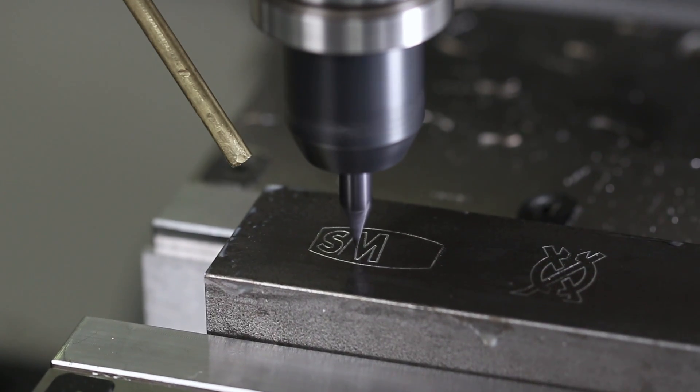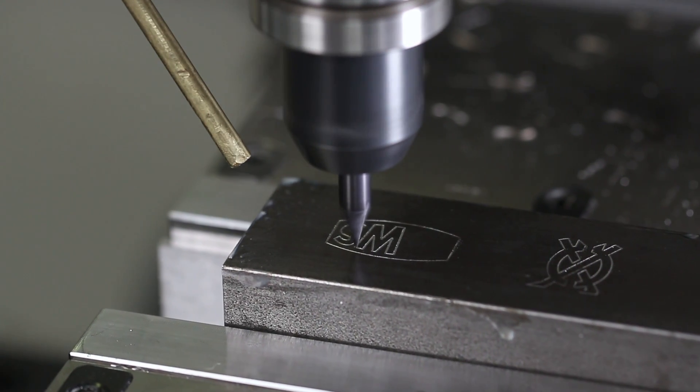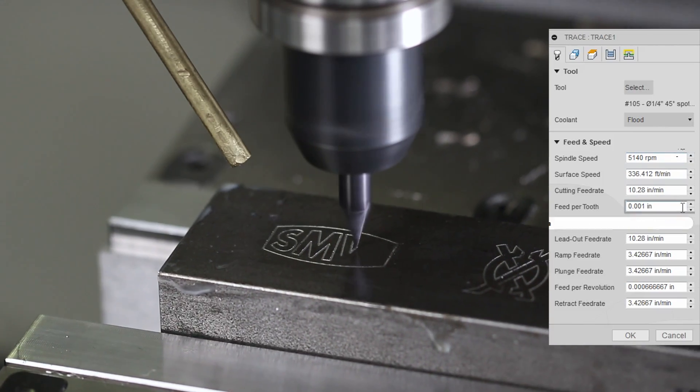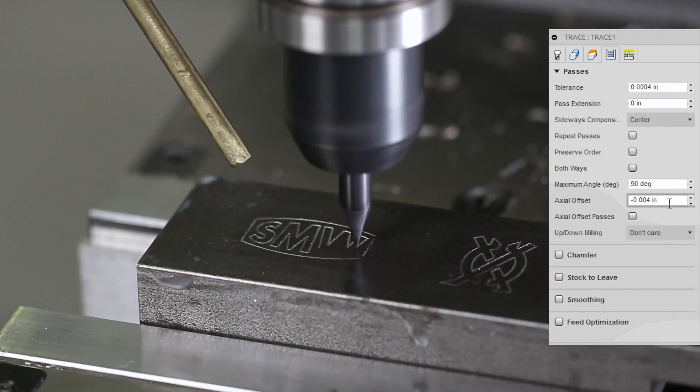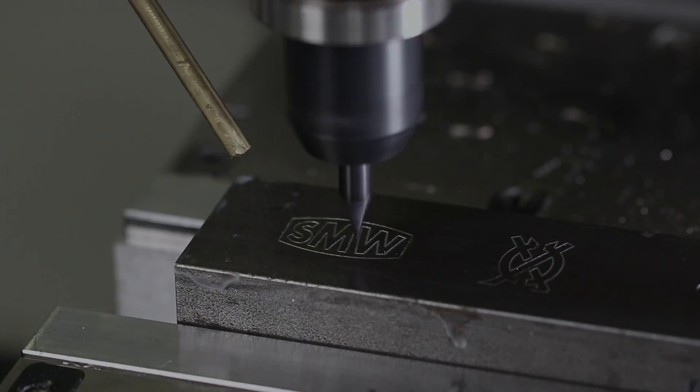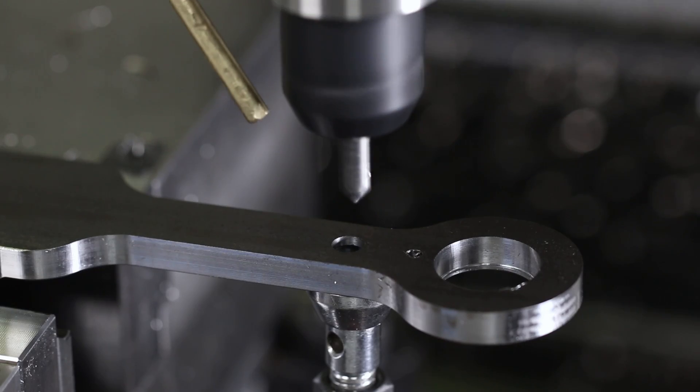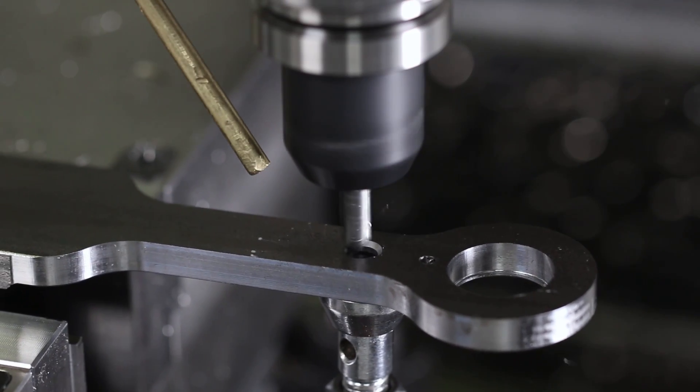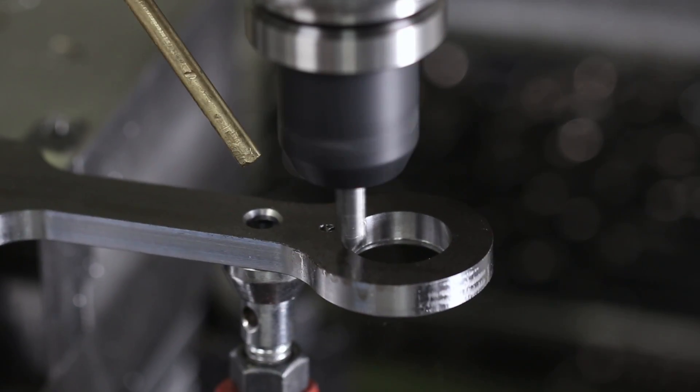Lakeshore Carbide 20 thou tip engraver. We love this tool. All the RPMs we got at 1 thou per tooth. 4 thou deep.